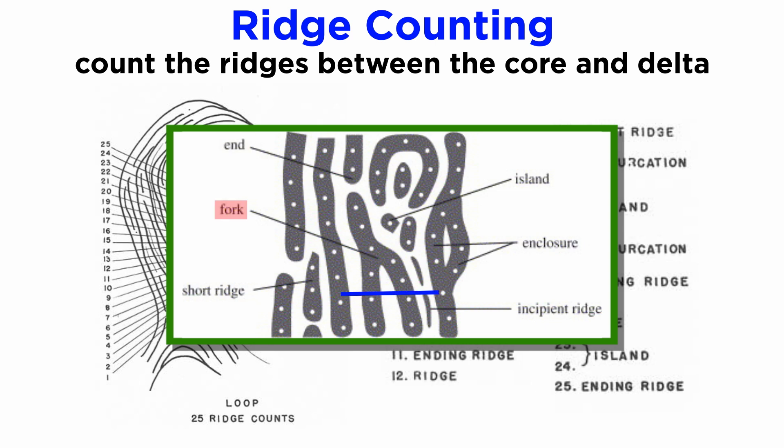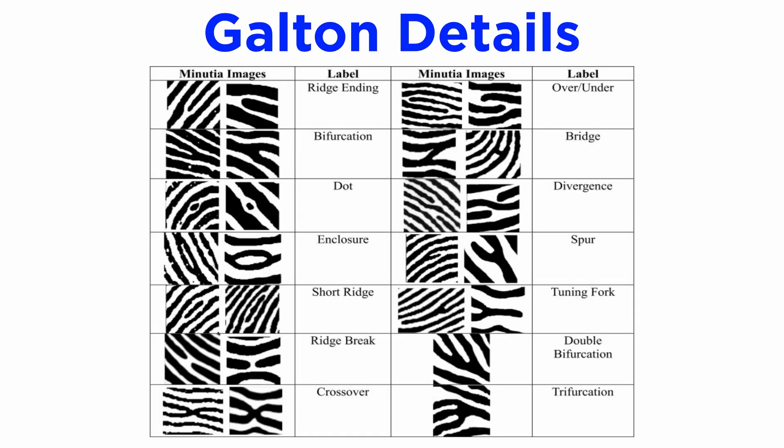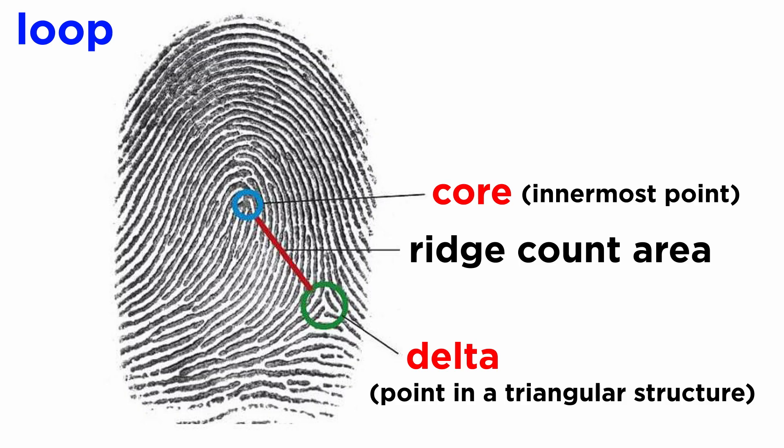If a bifurcation is present on the imaginary line, the ridge count is two. Even in impressions where the point of origin of a bifurcation is present on the imaginary line, the ridge count is two. Similar rules are applied for the rest of the Galton details present on the imaginary line. A loop pattern has one delta and one core, so only one imaginary line needs to be drawn, and subsequently ridges are counted.